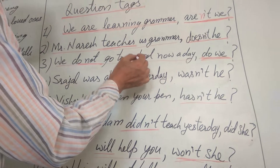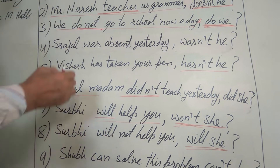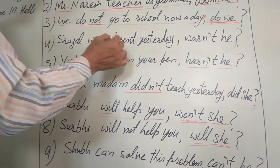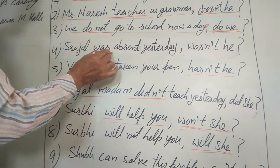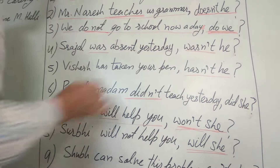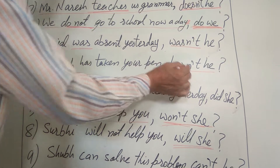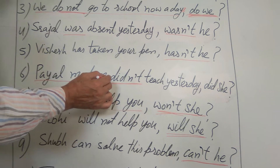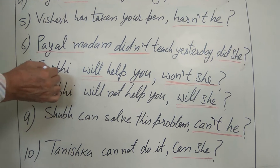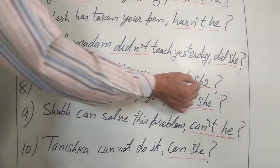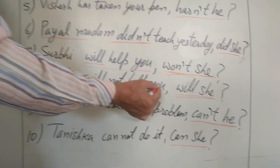'We do not go to school nowadays' — question tag. 'Doobie Shrizal was absent yesterday' — 'Wasn't he?' — 'Was absent, wasn't he?' 'Vishes has taken your pen' — 'Hasn't he?' — question tag. 'Payal Madam didn't teach yesterday' — 'Did she?' 'Surabhi will help you' — 'Won't she?' 'Surabhi will not help you' — 'Will she?'